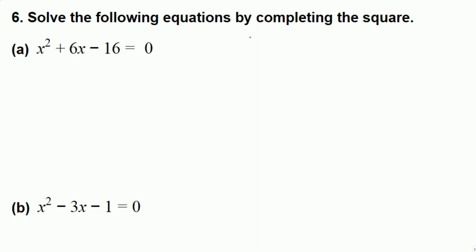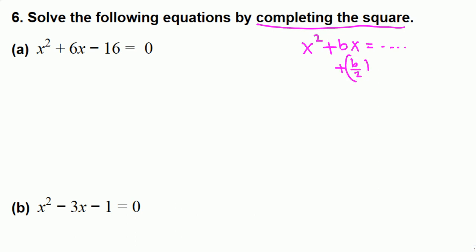Solve the following equations by completing the square. Let me tell you the general method. We have to keep only x² ± bx on the left side, and if there is a number, move that to the right side. Then add the number so that the left-hand side becomes a perfect square — for that, we add half of b squared, so (b/2)².